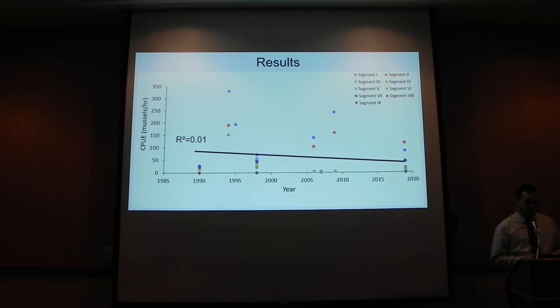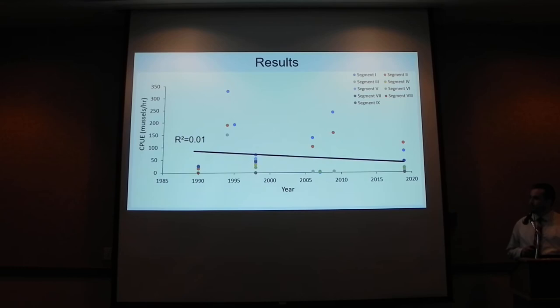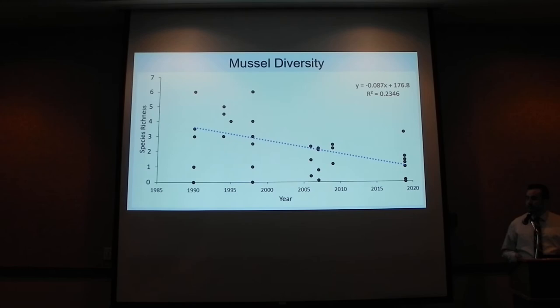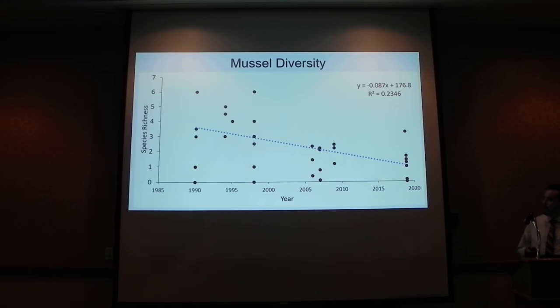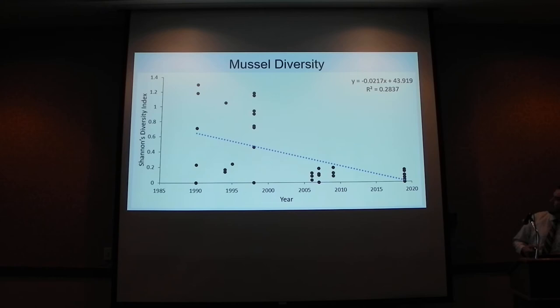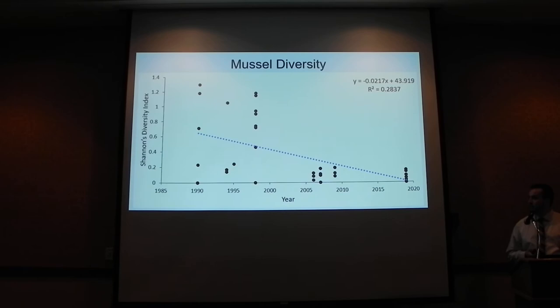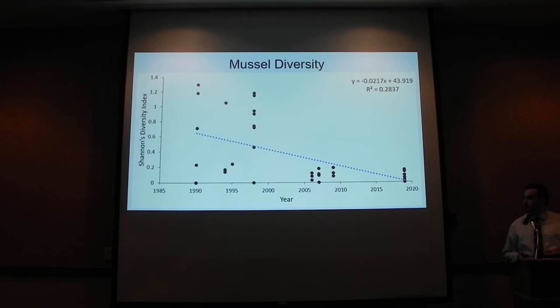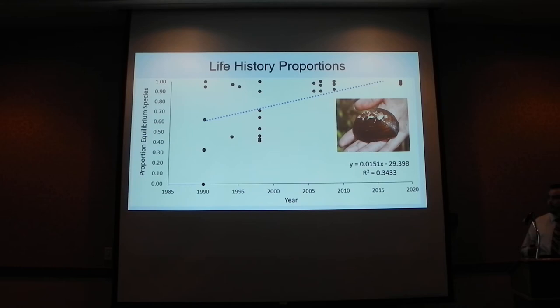Getting into the results: looking at total catch-per-unit effort over all times and all segments, we really didn't see a decline in the number of mussels throughout the time period. But when we calculate mean species richness, we see a number of segments with higher species richness in the 1990s compared to the 2000s and our current surveys. And when we calculate Shannon's diversity index, which accounts for abundances within segments, we see a sharper decline, with much higher scores throughout the 90s and less evenness in more recent surveys.